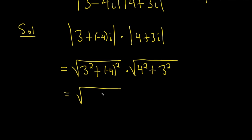This is equal to the square root of, this is 9 plus 16, and this here is 16 plus 9. Oh, how cool. So this will be the square root of 25, times the square root of 25. We're almost done.